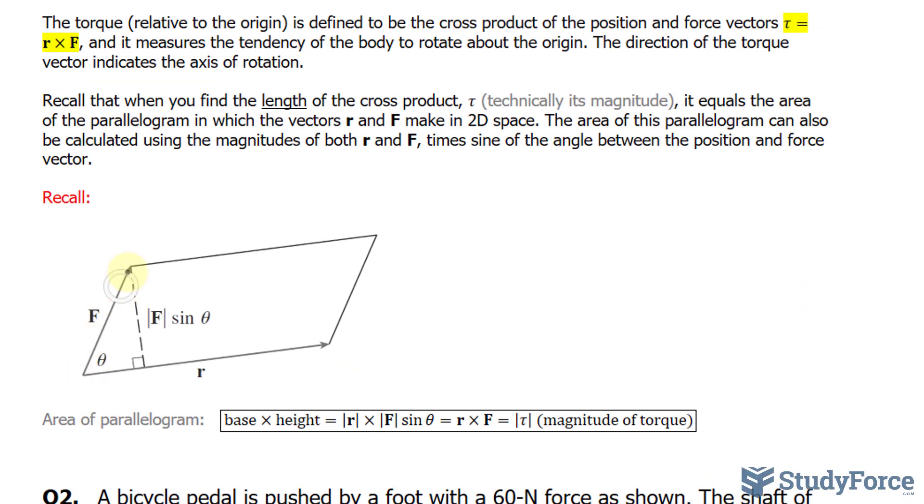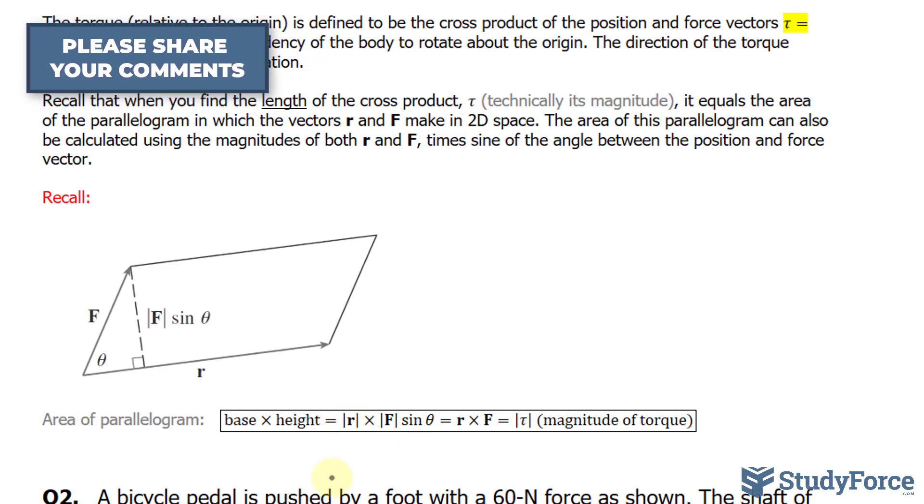If this represents the force vector, and that represents the position vector, finding the magnitude of the cross product of R and F is like finding the area of this parallelogram, and this formula can be broken down further by remembering that the area of a parallelogram is the base times the height, and that's the same thing as saying the magnitude of R times the magnitude of F times sine theta.